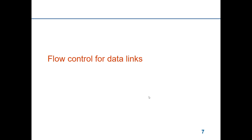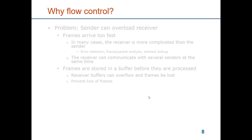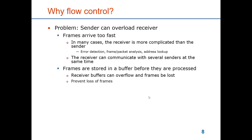Now to another function: the flow control for data links. Why do we need flow control? Well, the problem is that the sender can overload the receiver. That means that frames are sent faster than the receiver can receive them. How can this occur?